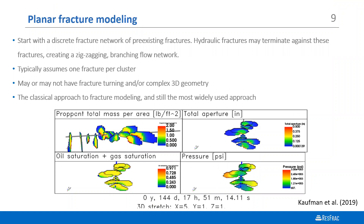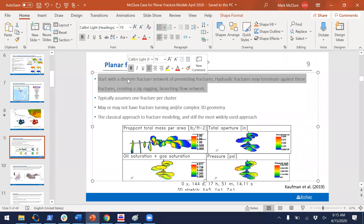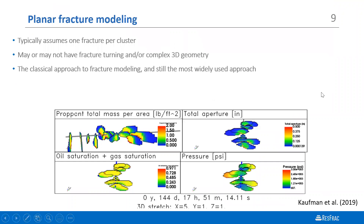A planar fracture model typically assumes one fracture per cluster, but not necessarily. There may or may not be fracture turning, and you could certainly have complex 3D geometry. The screenshot shows a planar fracture model where fractures are propagating in a straight line — though that is not a requirement. A planar fracture model could have crack turning but they do have complicated three-dimensional geometry, with stress shadowing causing fractures to get out of each other's way. You can see a couple of fractures popping up through a stress barrier into the overlying zone because the stress shadow is building up between all these clusters.